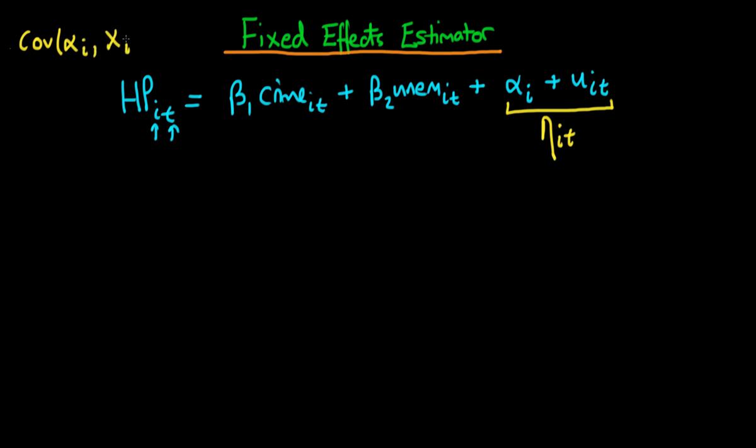And the problem which this unobserved heterogeneity actually posed was that there was some covariance between this unobserved heterogeneity and one or more of our explanatory variables which wasn't equal to zero.